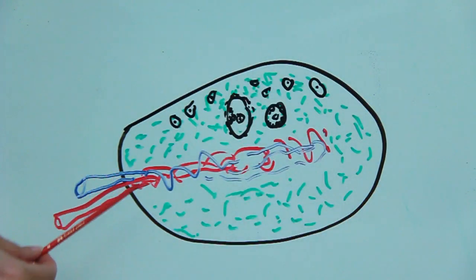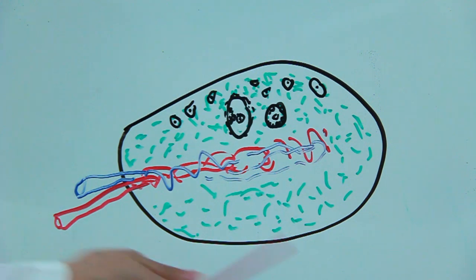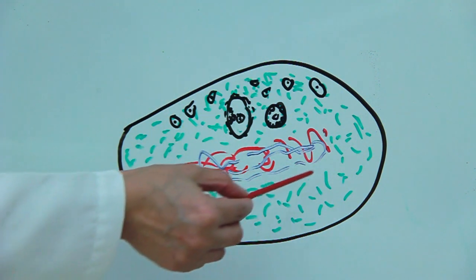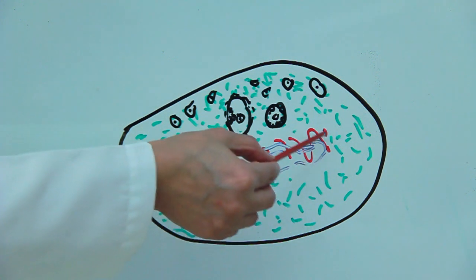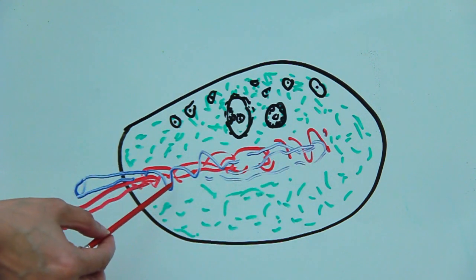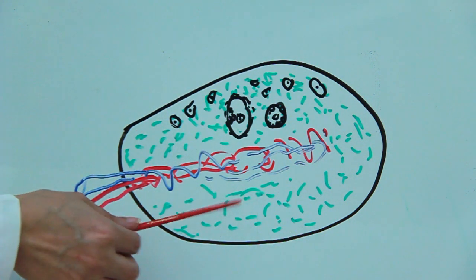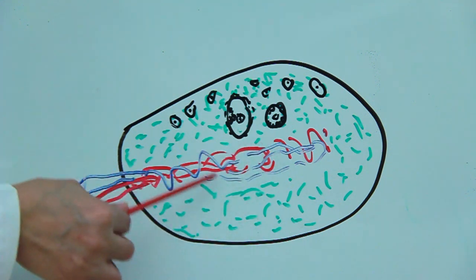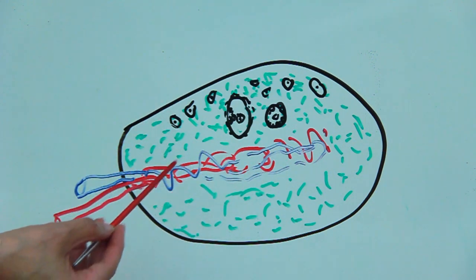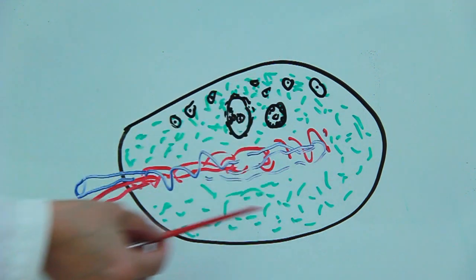If we section the ovary longitudinally and cut it open, we can see its solid internal structure. Like any other gland in the body, it is composed of a central inner region — the medulla, which is poorly defined in an ovary — and a thicker outer region known as the cortex. The medulla mainly contains blood vessels, capillary networks, and nerves serving this gland.